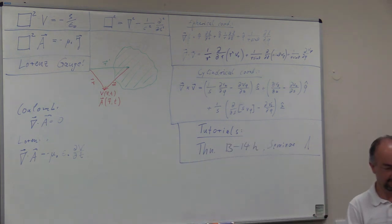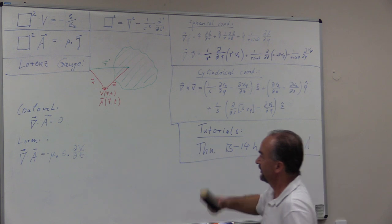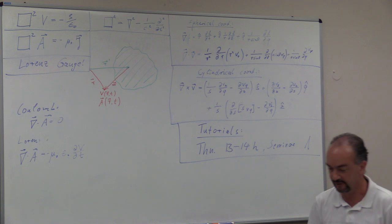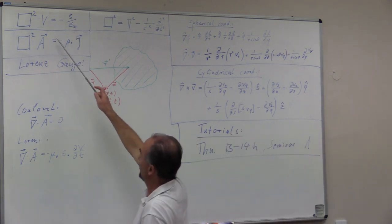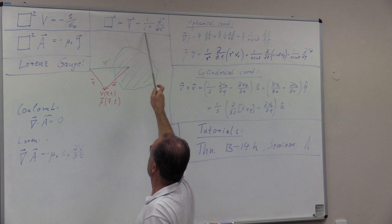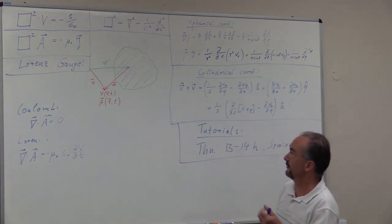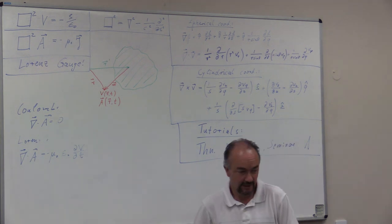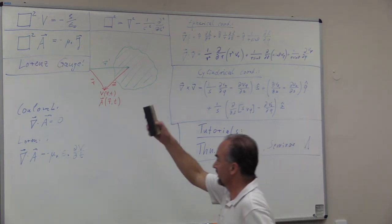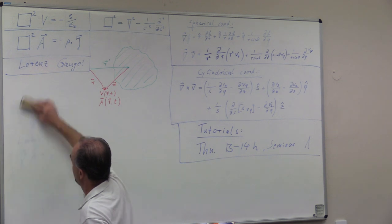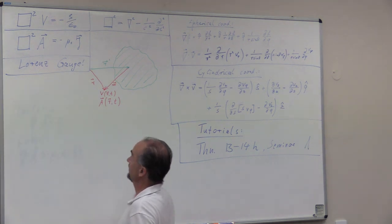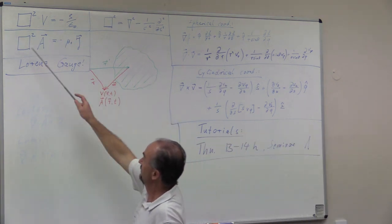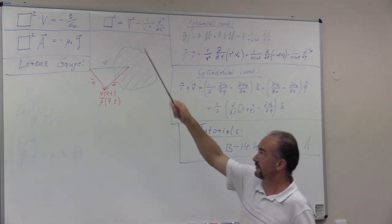So what we want to do today is use that to try to solve this differential equation. We have introduced the D'Alembert operator — this four-dimensional analogue of the Laplace operator, the Laplace minus the second time derivative. And the nice thing from the Lorentz gauge was that there's this symmetric way of writing V and A, simply as the D'Alembert of V equals minus rho over epsilon naught.